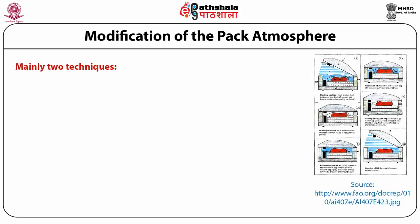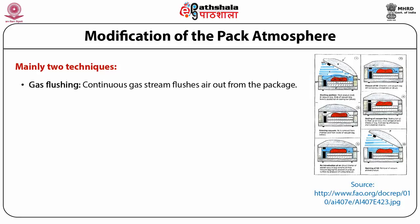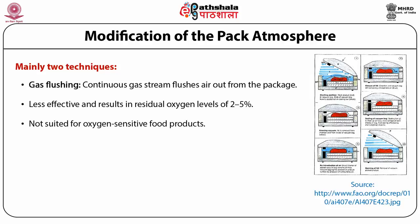MAP machines mainly use one of two techniques to modify the pack atmosphere. Gas flushing employs a continuous gas stream that flushes air out from the package prior to sealing. This method results in residual oxygen levels of 2–5% and is less suited for oxygen-sensitive food products. Gas flushing machines generally have a simple and rapid operation and therefore a high packing rate.